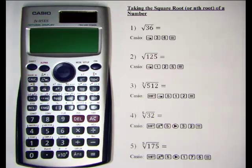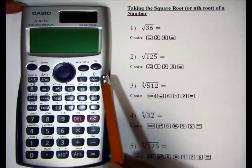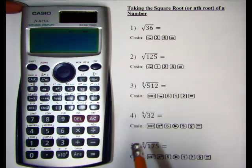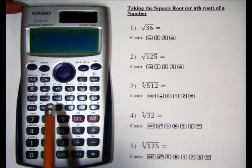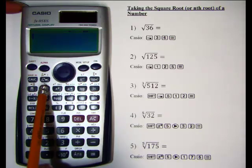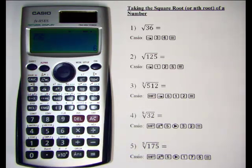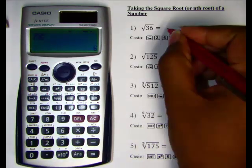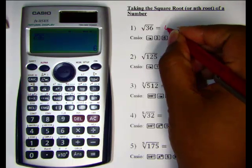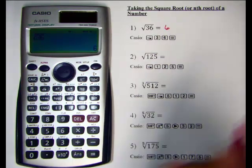The square root of 36 — we can probably figure that out without a calculator, but let's start by turning our calculator on, hit our square root button, type in 36, and hit equals. The square root of 36 is obviously 6.